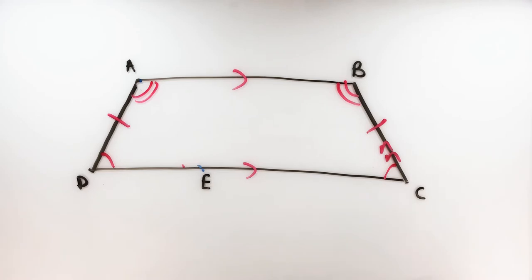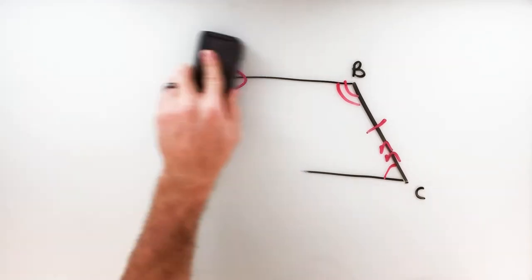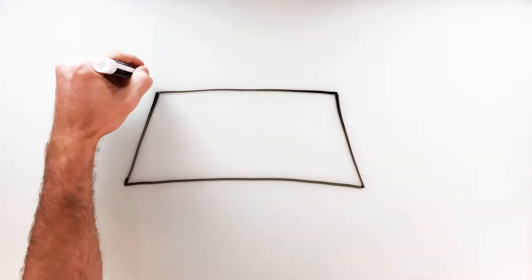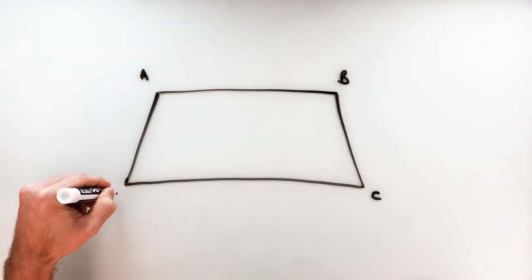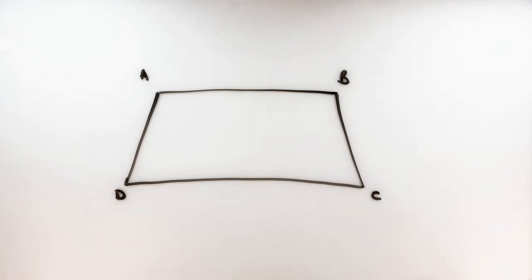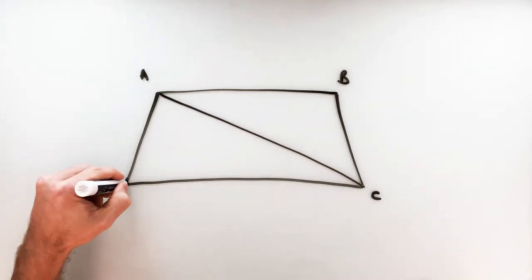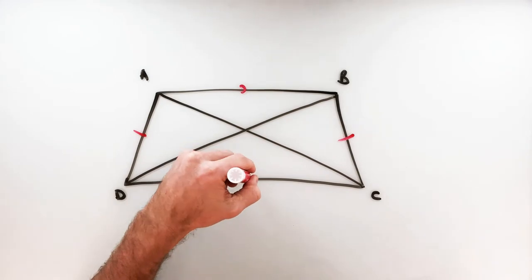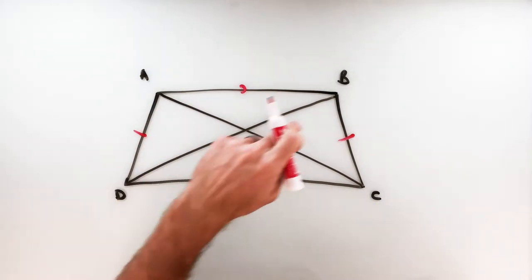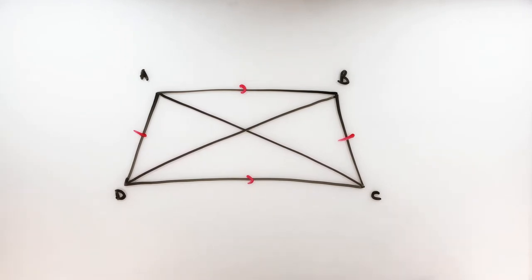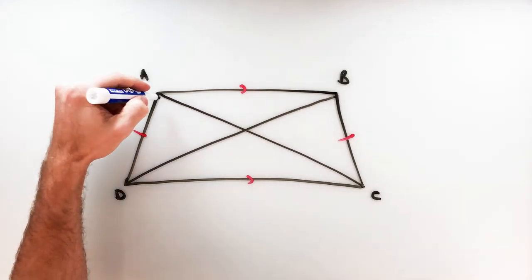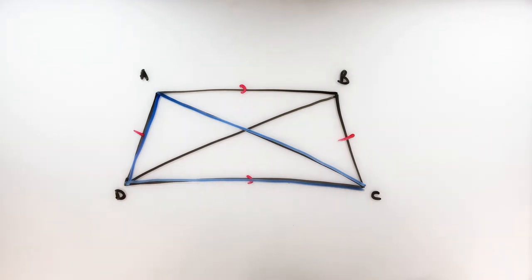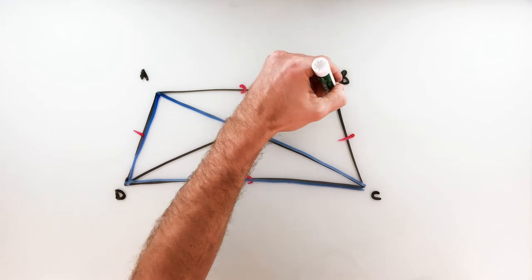That gives us congruent pairs of base angles — property number one. Property number two for the isosceles trapezoid is that the diagonals are congruent. The diagonals are lines that connect non-adjacent vertices. So diagonals AC and DB are going to be congruent to one another. To prove this, we look at two overlapping triangles: triangle ADC and triangle BDC.